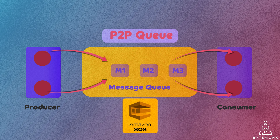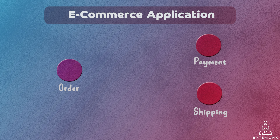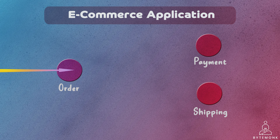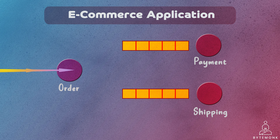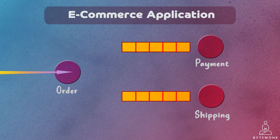Consider an example in the context of microservices communication. Imagine an e-commerce application with multiple microservices, including an order service, payment service, and shipping service. When a customer places an order, the order service needs to communicate with the payment service and the shipping service to process the order. The order service acts as the sender and enqueues a message containing the order details into the payment service's queue. The payment service, acting as the receiver, dequeues the message, processes the payment transaction, and acknowledges the completion.